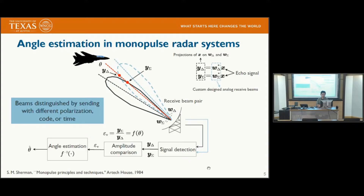Another angle estimation approach was developed in monopulse radar systems. The monopulse radar approach can provide high-resolution angle estimation, with the main objective of detecting target position using pairs of beams — a sum beam and a difference beam. From the projections of echo signals of these two beams, a so-called amplitude comparison metric is derived, which provides the high-resolution angle estimate.